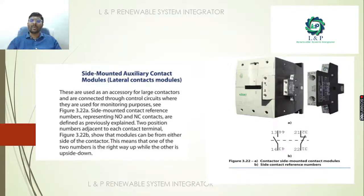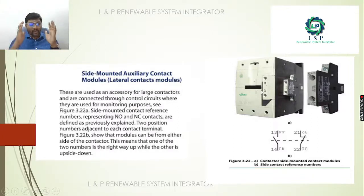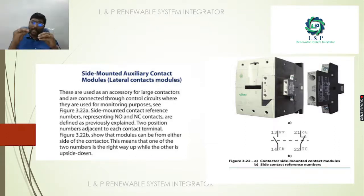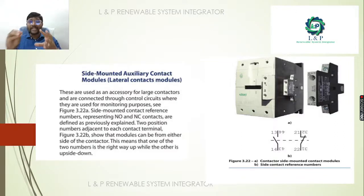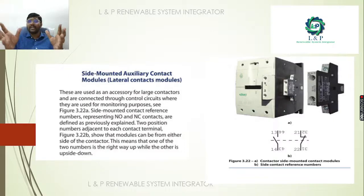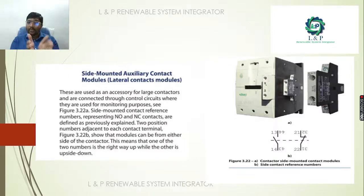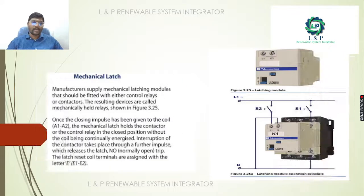For a side-mounted auxiliary contactor, there is an extra contact because the main terminals are used for power operations, while these auxiliary terminals are used for controlling operations and monitoring purposes — often as volt-free contacts.